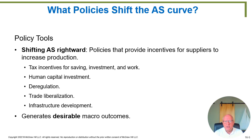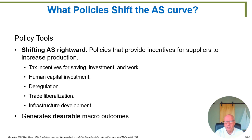Tax incentives for saving, investment, and work: if you can have the tax code rewritten in such a way — and we'll go through an example by the end of today's lecture — there could be a reason why both workers and business owners want to increase their work effort, savings, and investments. All of those things shift the productive capacity of the country to the right on the graph, increasing output.